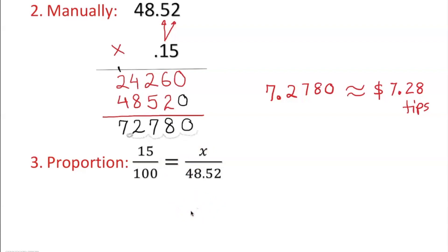If you cross-multiply, it's going to be like that. You divide by 100, and x is equal to $7.28. That's how we do this problem. Thank you.